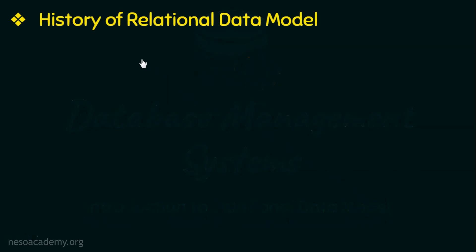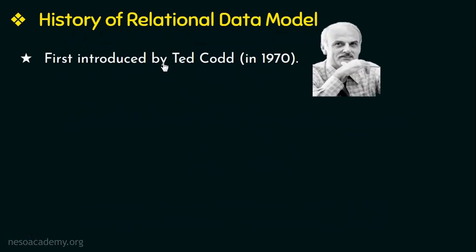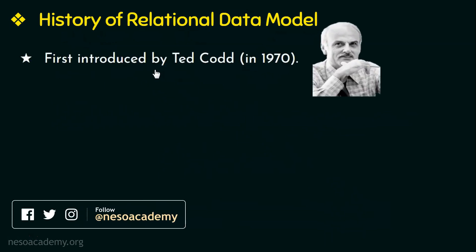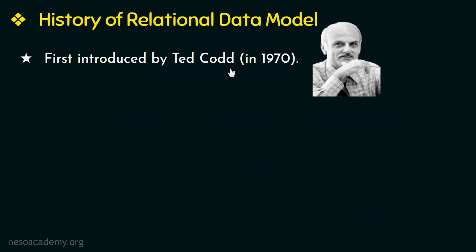First let us look into a brief history of relational data model. The relational data model was first introduced in 1970 by a computer scientist and mathematician named Edgar Frank Codd, also called Ted Codd. He was working for IBM when he invented this relational model. In this model he gave a simple way of storing as well as retrieving data via rows and columns in a table.